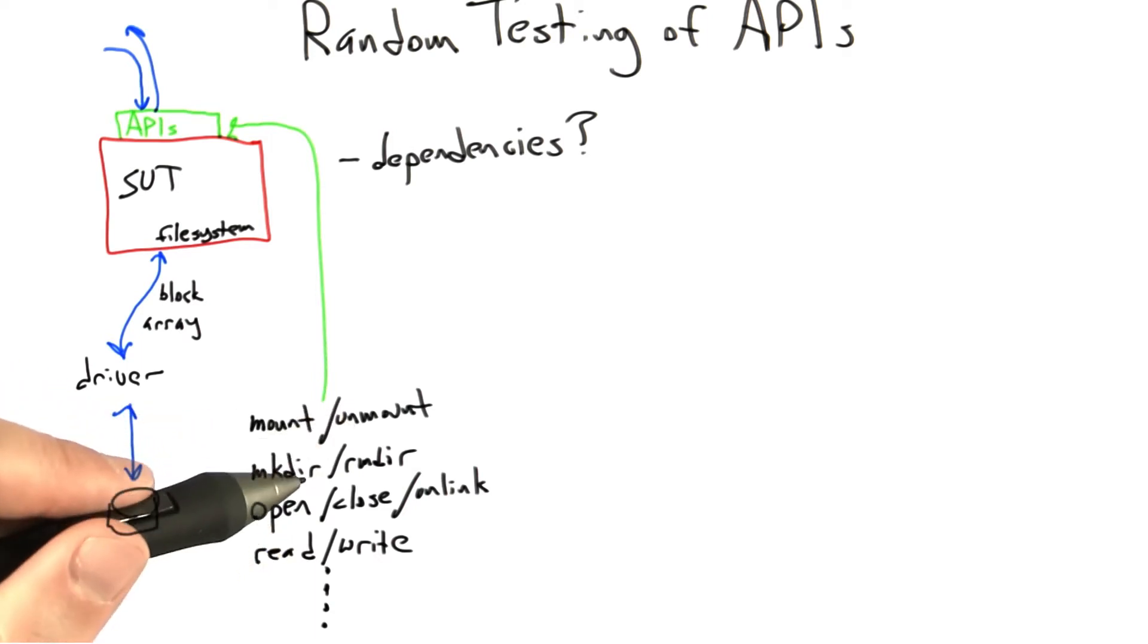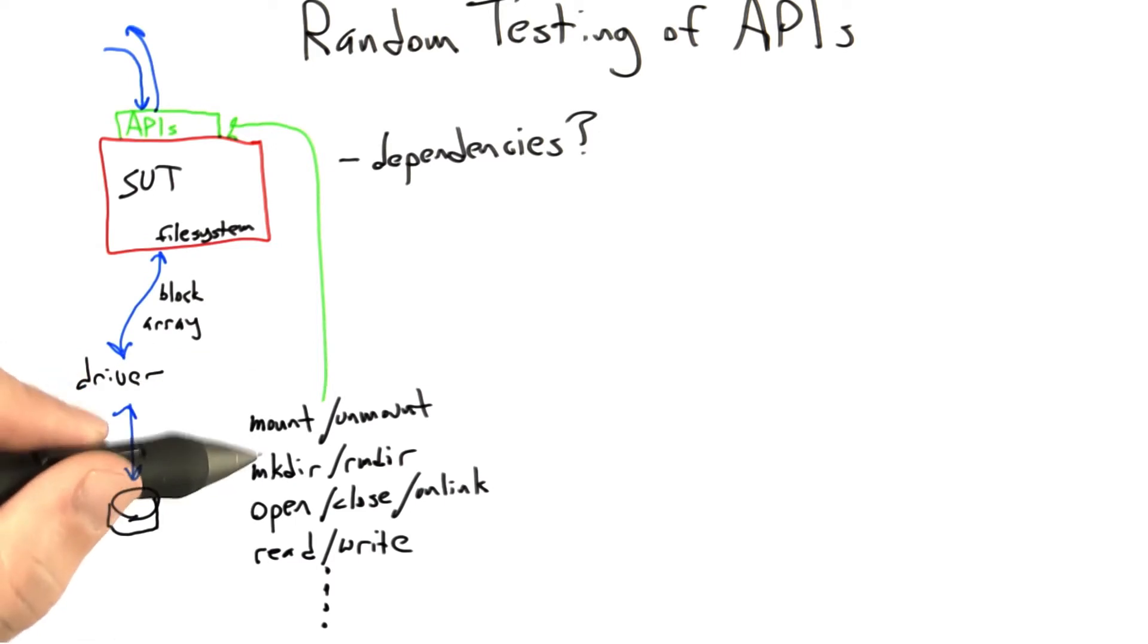And so if we do something silly like providing completely random arguments to open, read, and write, then the odds of us actually successfully reading or writing to an open file are going to be extremely low. So we're going to have to do something more systematic.